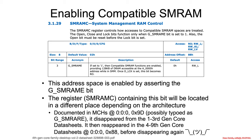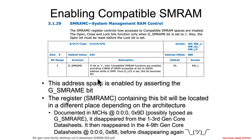How do you enable that compatible SMRAM range? There is a register called SMRAMC — System Management RAM Control. It has a GSMRAME bit, Global SMRAM Enable. It says that if this is set to 1, compatible SMRAM functions are enabled, providing 128K of DRAM accessible starting at 0xA0000 up to 0xBFFFF. Once DLOC is set, this bit becomes read-only — we'll learn about DLOC in a moment.